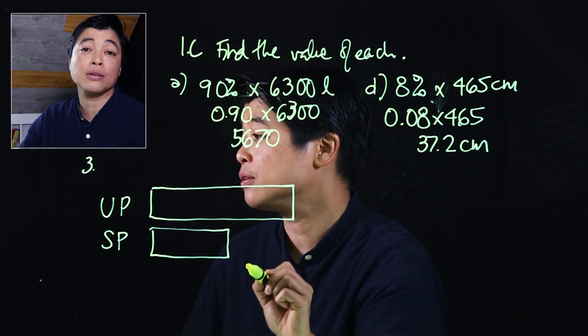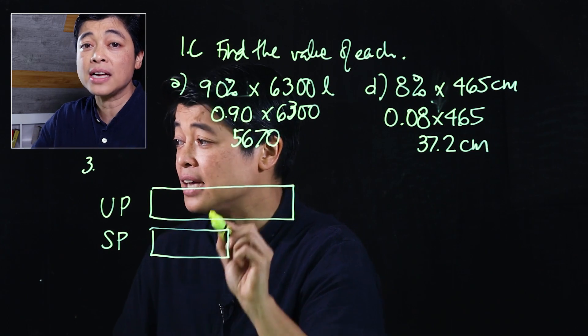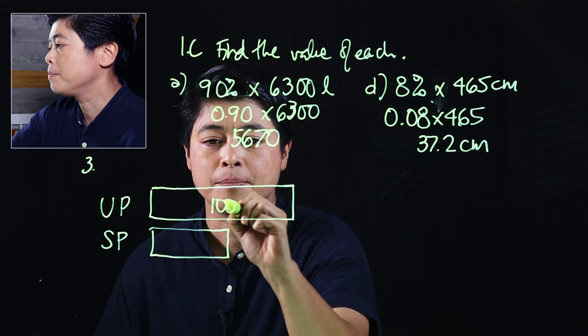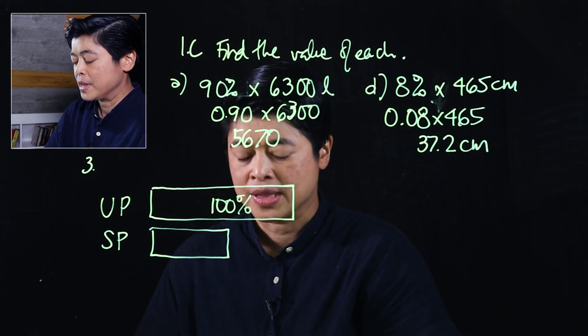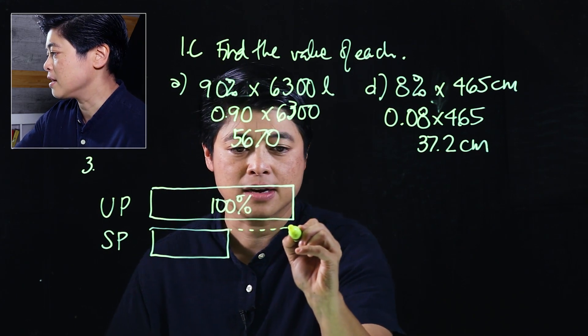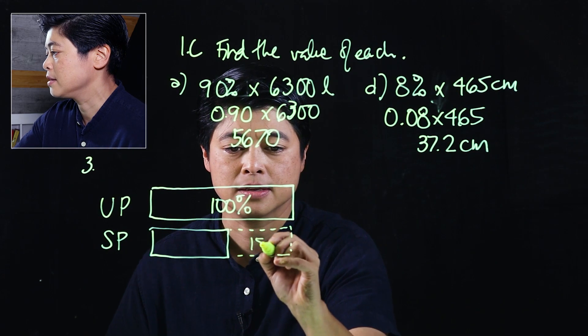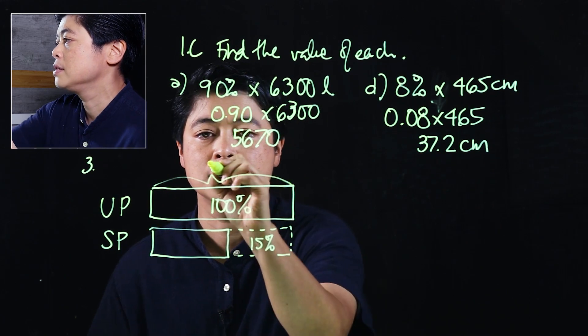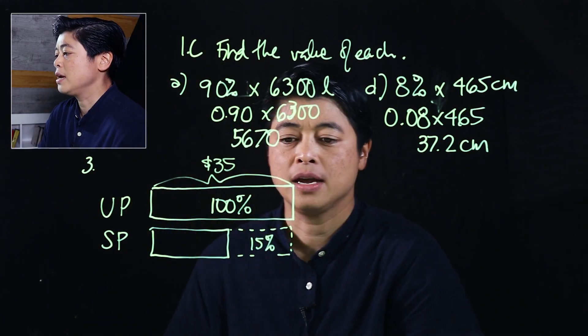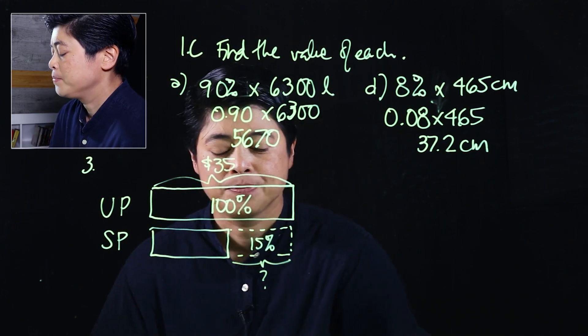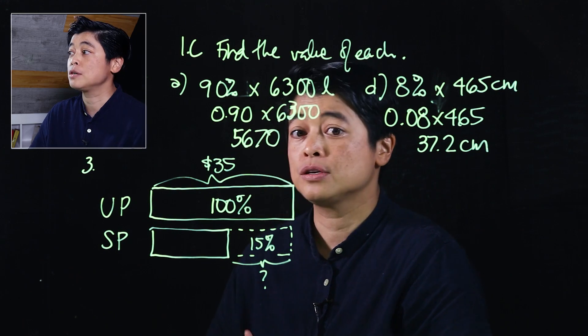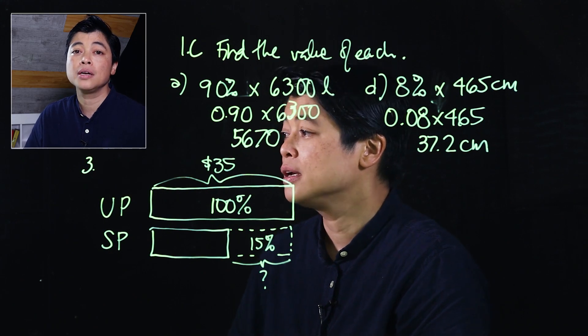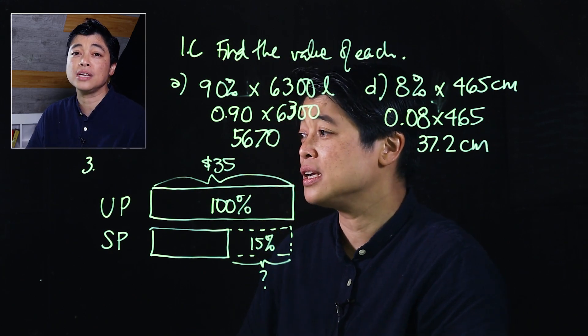When we're given percent, we're going to put it inside the bar model so that it won't be confusing for the kids. Values have always been outside, it's just this time around they'll give us percent. So the usual selling price is 100%, then this is 15% discount, and the usual price is $35. This is the question. This has many possible solutions, so I'll show all the possible solutions starting with what the book gives us, then I'll give alternatives using my methods.